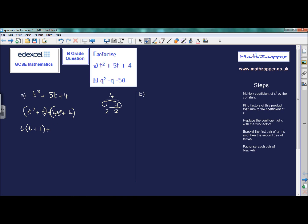What's the highest common factor of 4t and 4? 4, so that can come outside of the brackets. What do we multiply 4 by to get 4t? We multiply it by t. What do we multiply 4 by to get 4? We multiply that by 1.